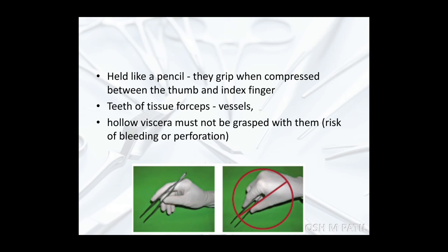The technique is to hold like a pencil — they grip when compressed between the thumb and index finger. It is better to avoid holding toothed forceps on hollow viscera, as there is a high chance of injuring the hollow viscus structure. Holding medium-sized vessels with toothed forceps may cause bleeding, and holding bowel may cause minor perforations.